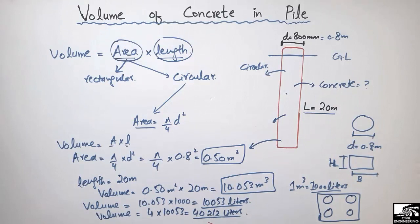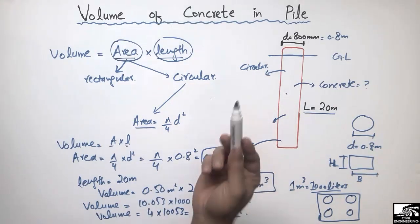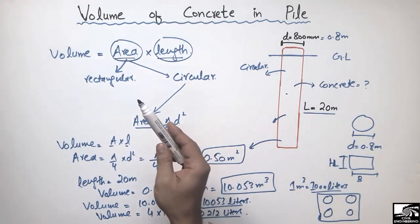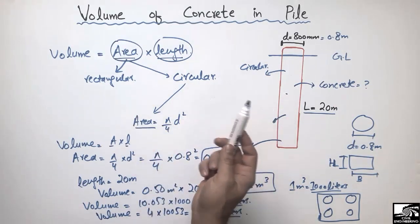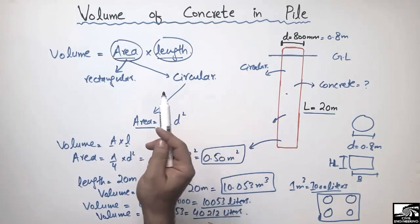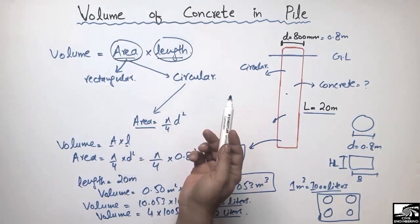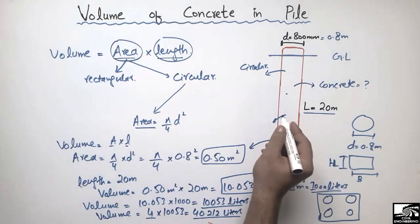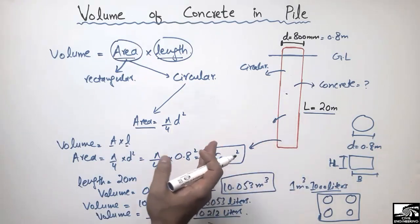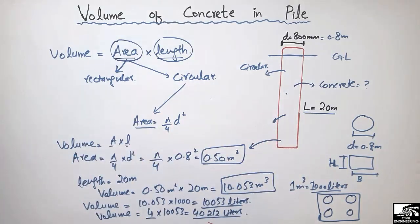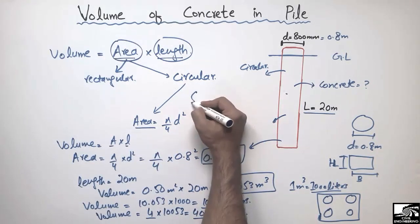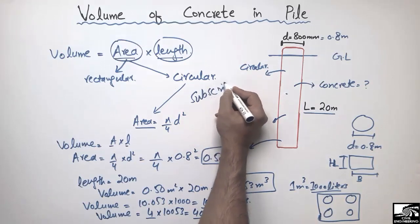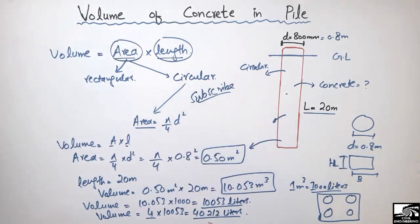I hope you understand how to find the volume of concrete in a single pile. With the same number of piles having the same dimensions, you can just multiply the volume of concrete for a single pile by the number of piles to get the total quantity. This was all about today's lecture — don't forget to subscribe to my channel. Thank you for watching.